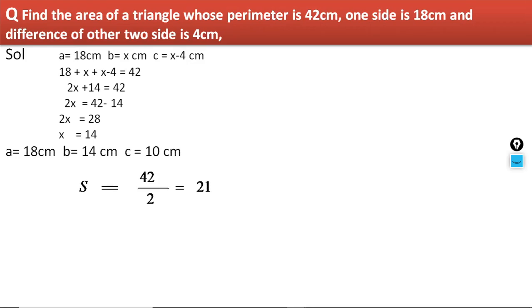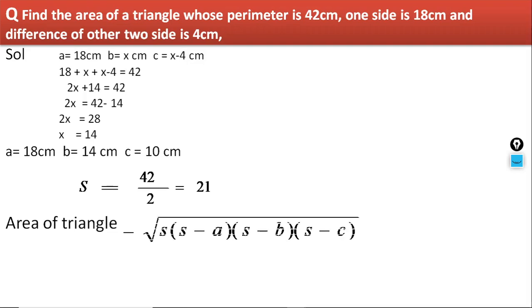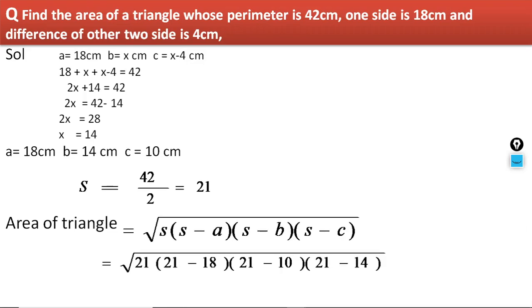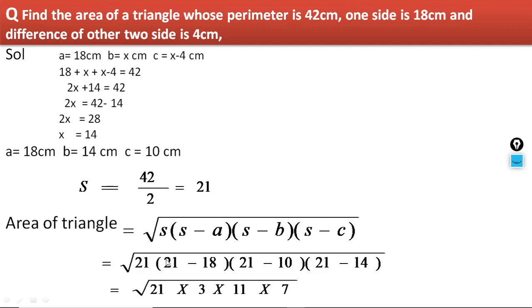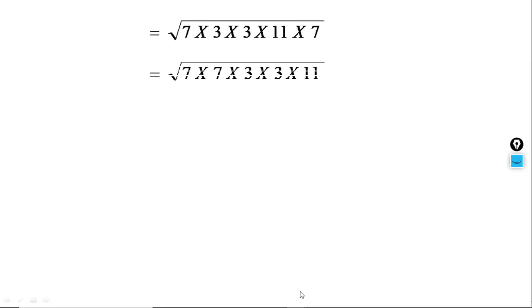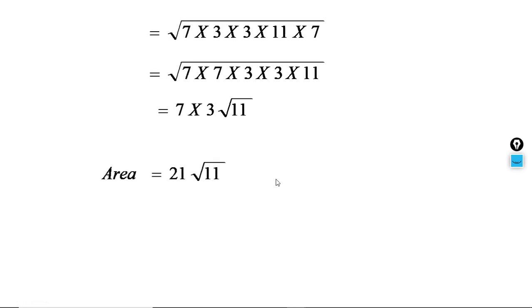We find the semi-perimeter, which is 21. Then the area of the triangle is √(21 × (21−18) × (21−10) × (21−14)) = √(21 × 3 × 11 × 7). After pairing, we get 21√11 square centimetres.